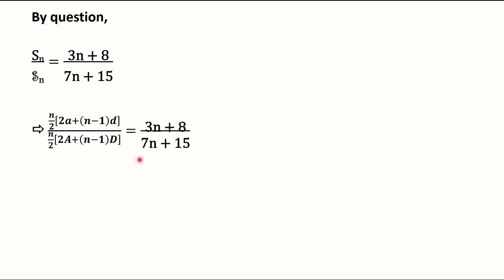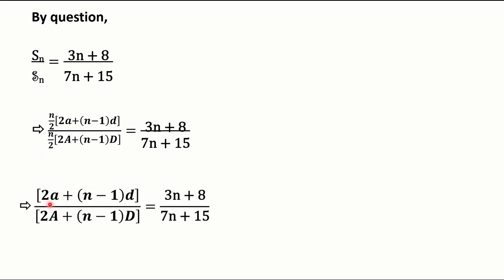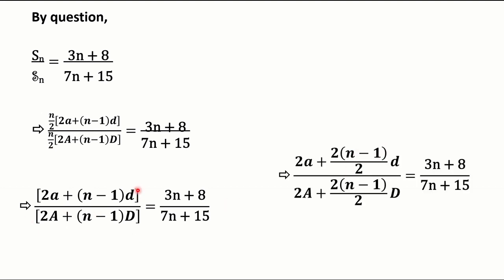Now we will put the value of both Sn expressions. After substituting, we can see that the n/2 in the numerator and the n/2 in the denominator can be cancelled. After cancellation, we get the simplified line where we have copied all other terms as they are, just removing the n/2.